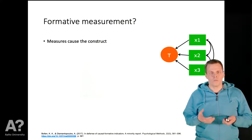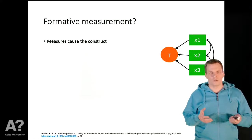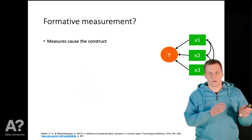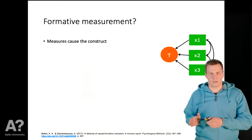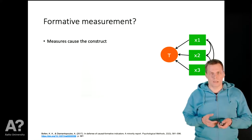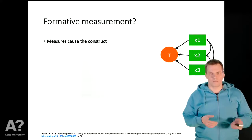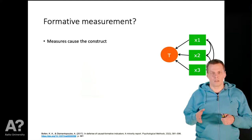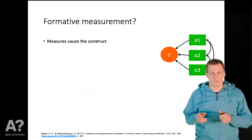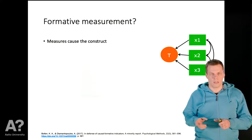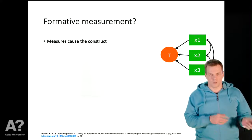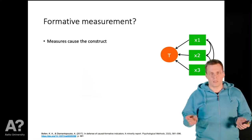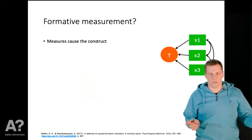The normal measurement model we use shows that the concept we measure is a cause of the indicators. The definition of validity used here says that an indicator is valid if the variation in the indicator is causally produced by the variation of the construct. So the idea is that the indicators vary because the construct varies.